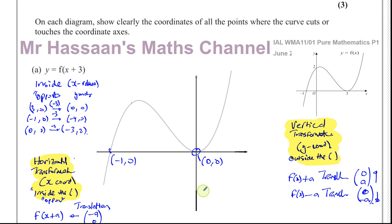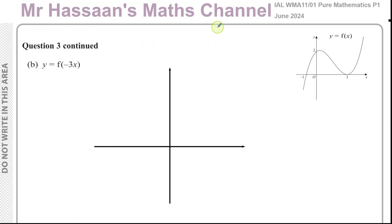So we did a review of translations: inside the bracket gives a horizontal translation and affects x-coordinates — and it's opposite in sign. Outside the bracket gives a vertical translation and affects y-coordinates — and the sign is normal. Now we're going to do a similar thing with part B, which is f of negative 3x. Again, the change has happened inside the brackets.